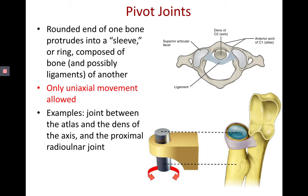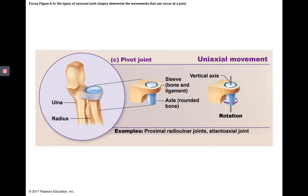Pivot joints also allow only uniaxial movement, generally rotation. You see a pivot joint when a rounded end fits into a sleeve made by a ligament or bone. They're found between the atlas and axis — C1 and C2 — and between the proximal ends of the ulna and radius. Pivot joints allow for pronation and supination and for turning the head left and right.